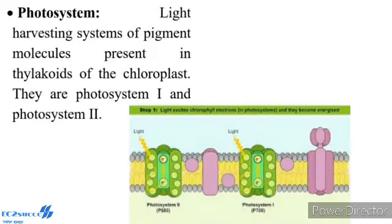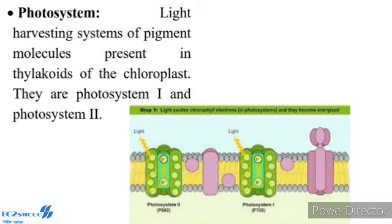Photosystem: The light-harvesting system of pigment molecules present in thylakoids of the chloroplast. They are Photosystem I and Photosystem II. The discovery of the Emerson effect clearly indicated that photosynthetic pigments are organized into two discrete photochemical light-harvesting complexes (LHC). The light-harvesting complexes are made up of hundreds of pigment molecules bound to protein. Each photosystem has a photocenter or reaction center fed by about 200 harvesting pigment molecules. The photocenter consists of a special chlorophyll A molecule, and the photocenter is different in both photosystems.